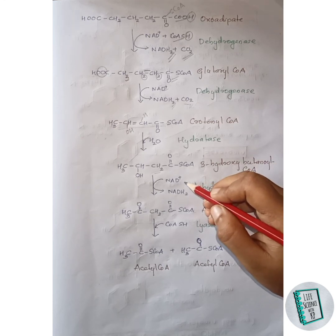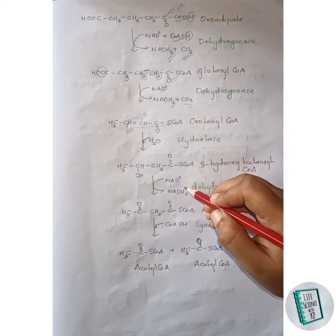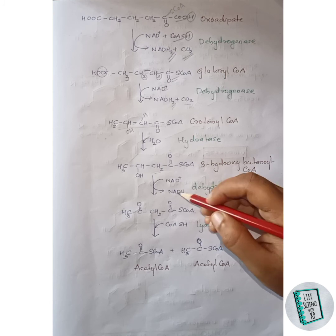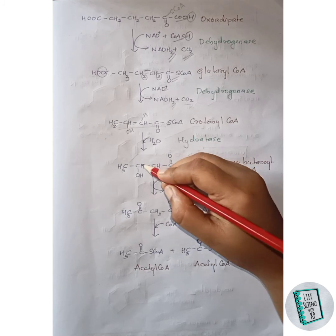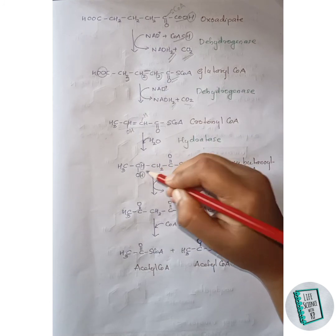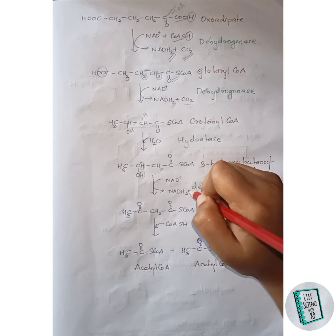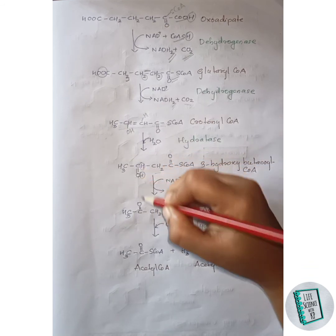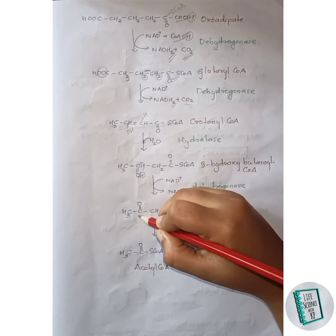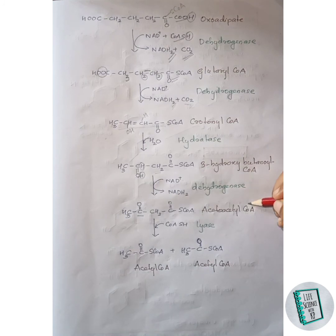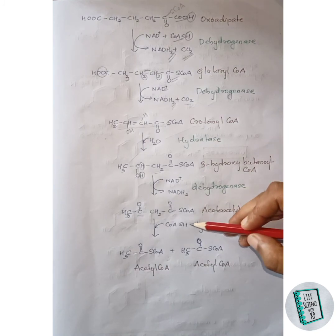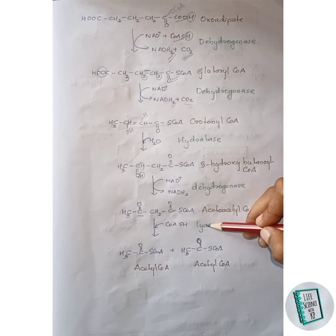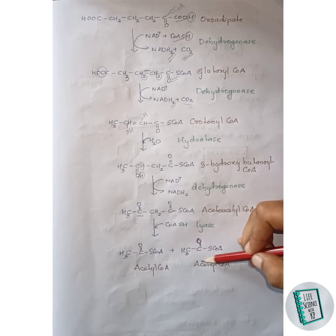3-hydroxybutanyl-CoA then in the presence of dehydrogenase enzyme forms acetoacetyl-CoA. NAD+ acts as coenzyme. Two hydrogen atoms are removed — this hydrogen and that hydrogen are removed with NAD+ as NADH2 — and a double bond forms between the carbon and the oxygen. Thus acetoacetyl-CoA is formed.